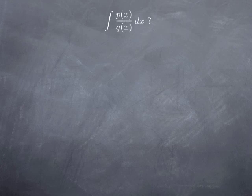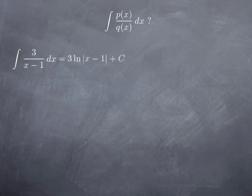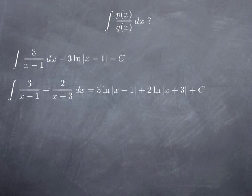There are cases that are easy for us to handle, that we already know how to integrate. For instance, if we want to integrate 3 over (x minus 1), this is of the form 3 du over u, where u is x minus 1. So we get the natural log of absolute value of x minus 1. It would be equally easy to integrate a sum like 3 over (x minus 1) plus 2 over (x plus 3), giving 3 ln|x-1| + 2 ln|x+3| plus a constant.